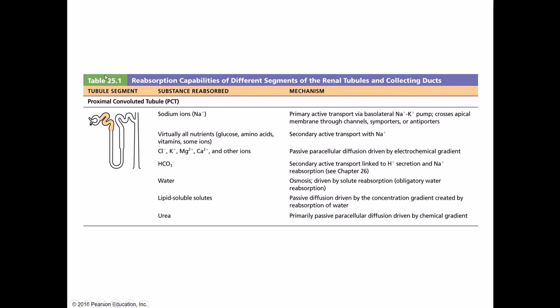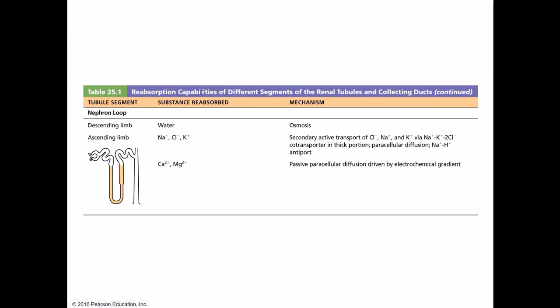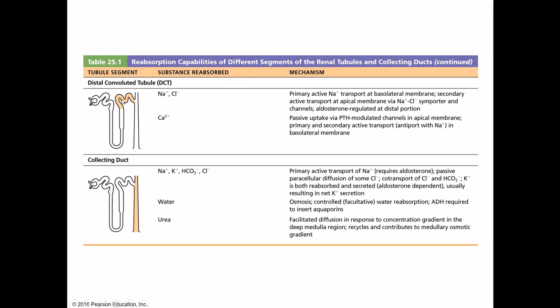Table 25.1 is a really good summary table that looks at all parts of the nephron, listing what gets reabsorbed and how it gets reabsorbed by the different parts of the renal tubules. We'll talk more about the nephron loop in a separate lecture, but the table also covers the distal convoluted tubule and collecting ducts — a great overall reference for the reabsorption function of the renal tubules.